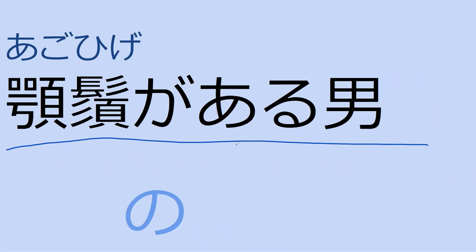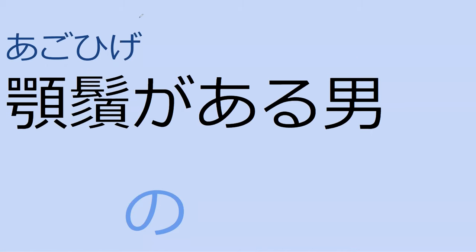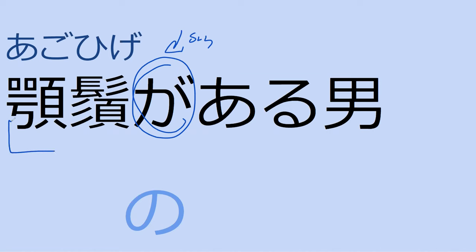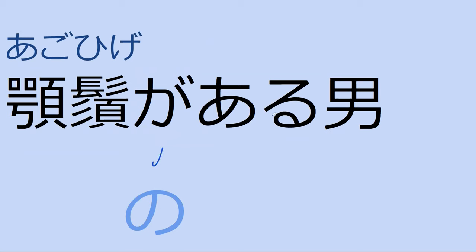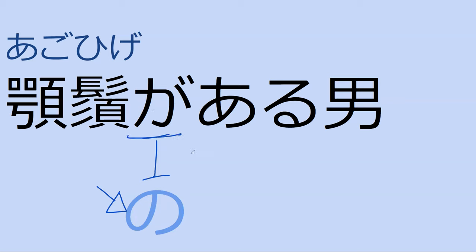What do you think 顎髭がある男 means? The man with a beard. Perfect — a man with a beard. So there's something that can occur in Japanese: if が is marking the subject of a relative clause describing 男, you can replace that が with の. So rather than saying 顎髭がある男, you can say 顎髭のある男 — it means the exact same thing. The reason for using の is that it's easier to understand. From my experience both forms appear, and from my understanding this substitution is optional.